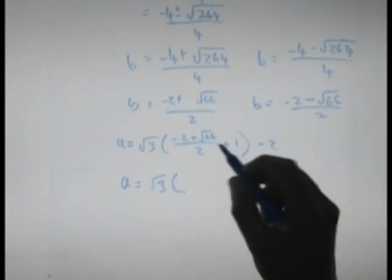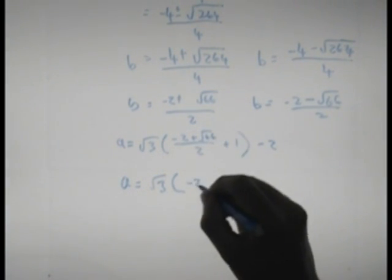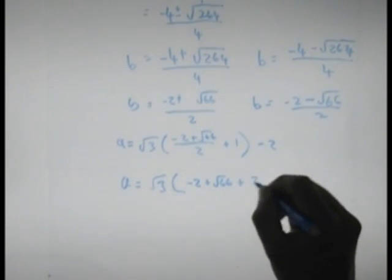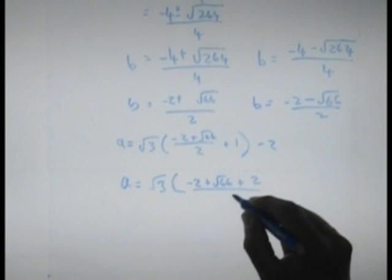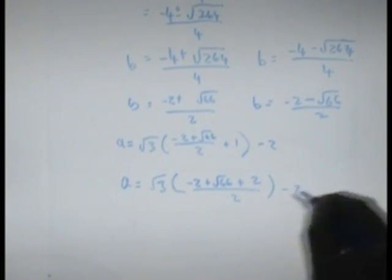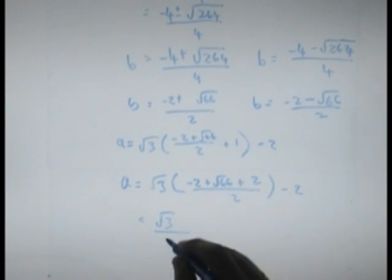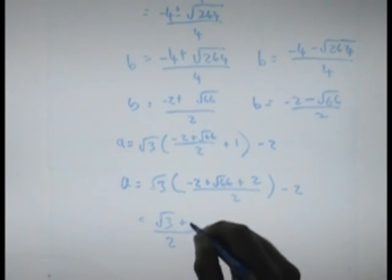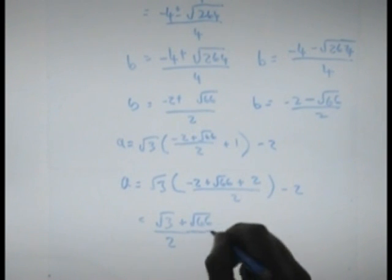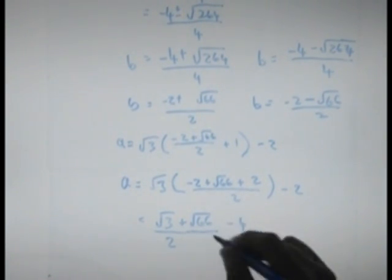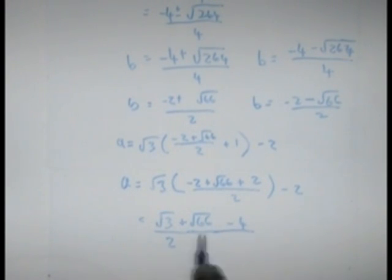That's going to equal, or rather give us an a value of root 3. Let's keep the root 3 on the outside. That's going to be minus 2 plus root 66 plus 2 over 2 minus 2, which is going to give me root 3 over 2 minus 2 plus 2 cancel. So it's plus root 66 minus 2 or minus 4 over 2. So it's root 3 plus root 66 minus 4 over 2.